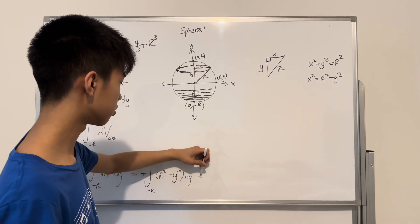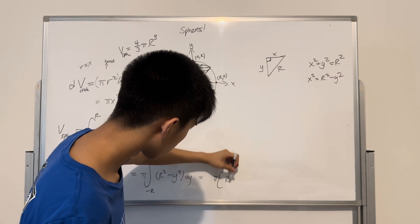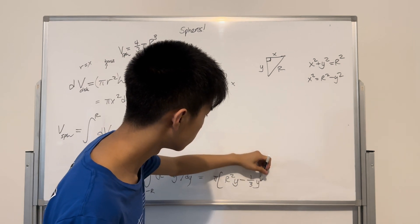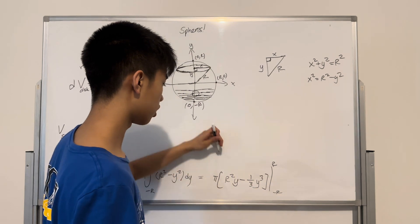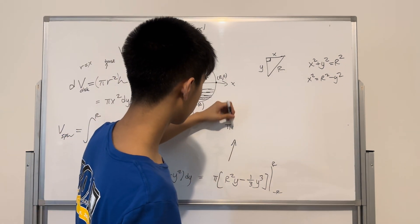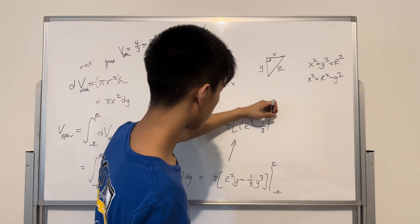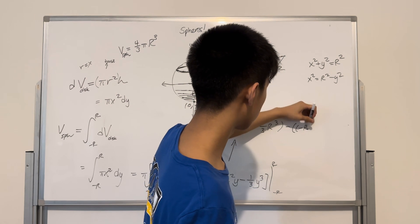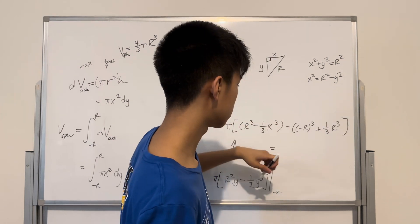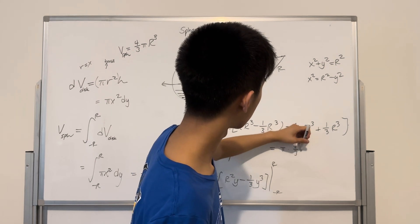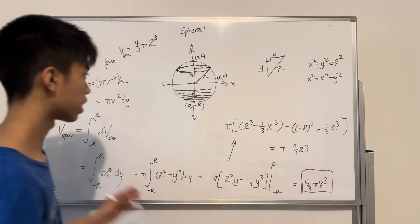Now we integrate with respect to y, giving us pi times [r squared y minus one-third y cubed] evaluated from negative r to r. Plugging in the bounds: pi times [(r cubed minus one-third r cubed) minus (negative r cubed plus one-third r cubed)], which works out to pi times four-thirds r cubed — our final answer: four-thirds pi r cubed. That's how we derive the volume of a sphere.